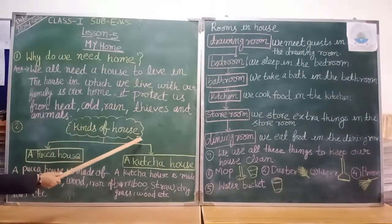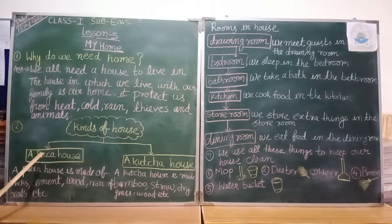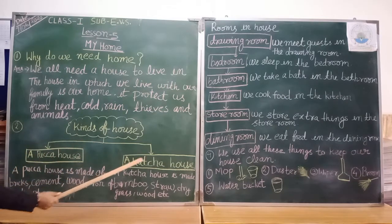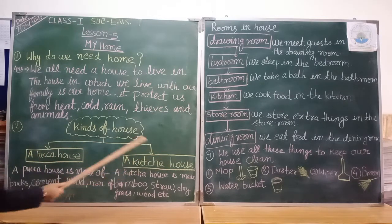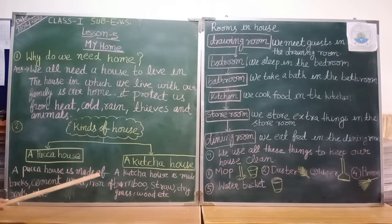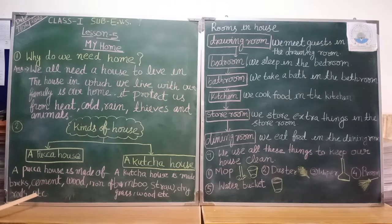Kinds of house. There are two types of houses: a pakka house and a kaccha house. A pakka house is made of bricks, cement, wood, iron rod, etc.